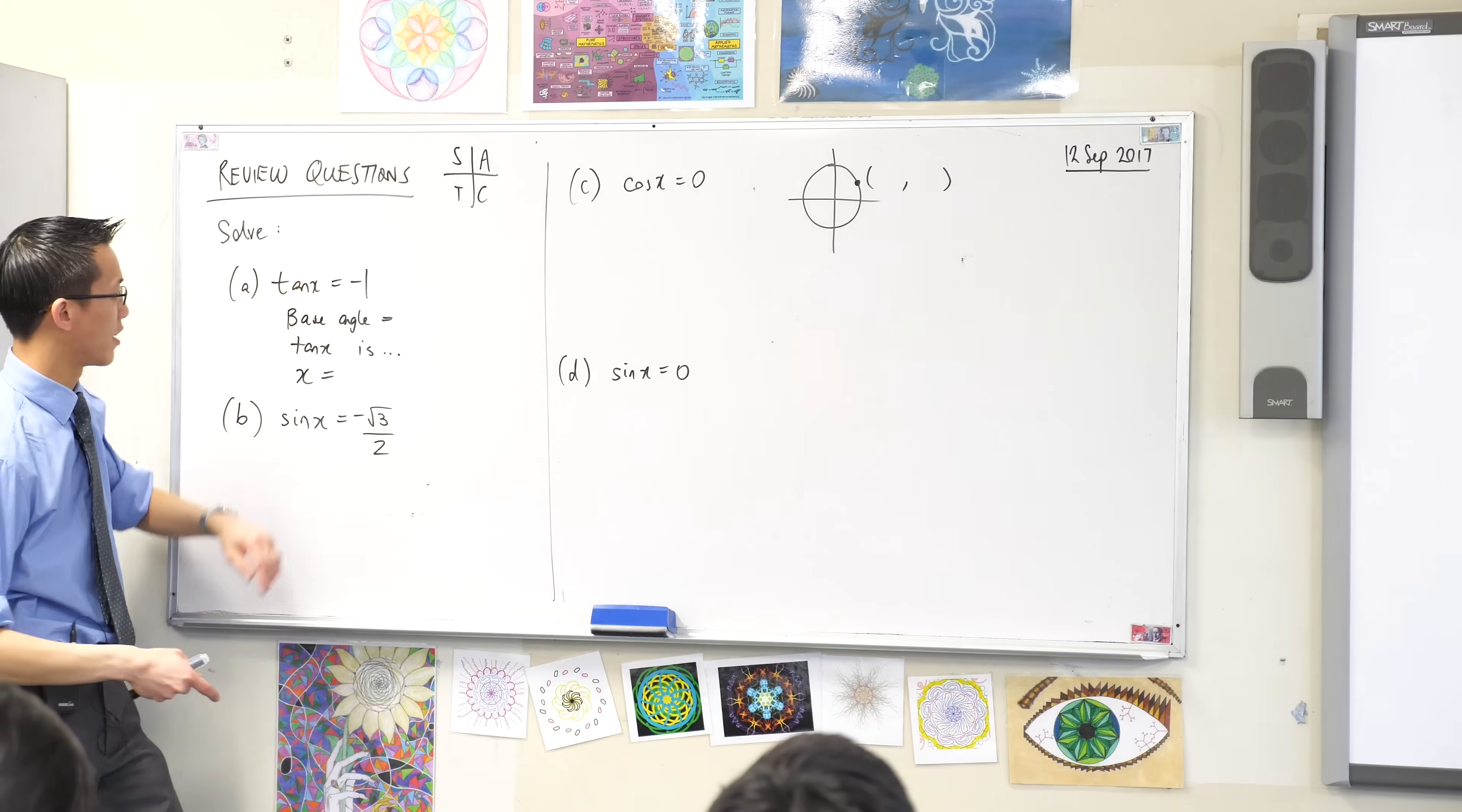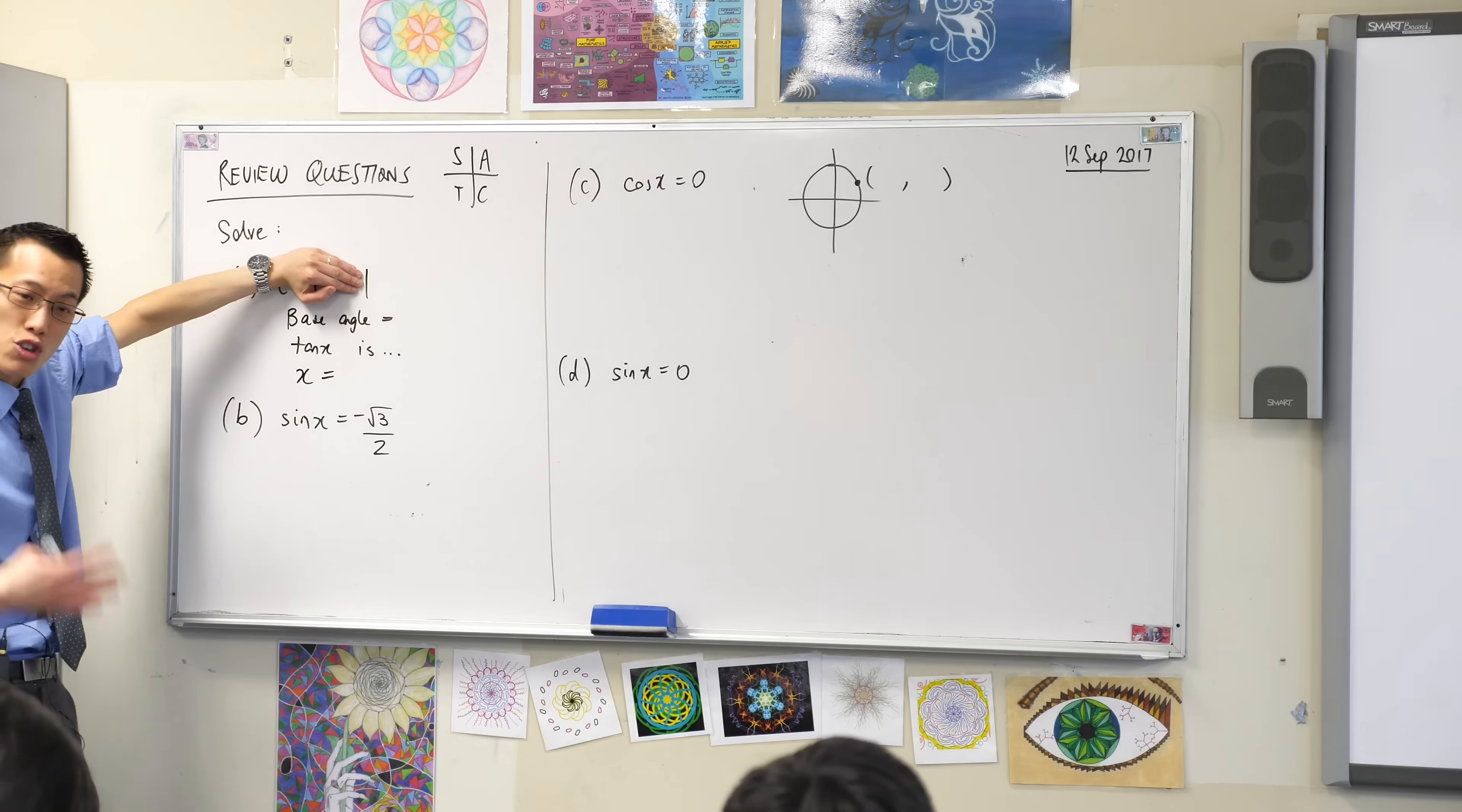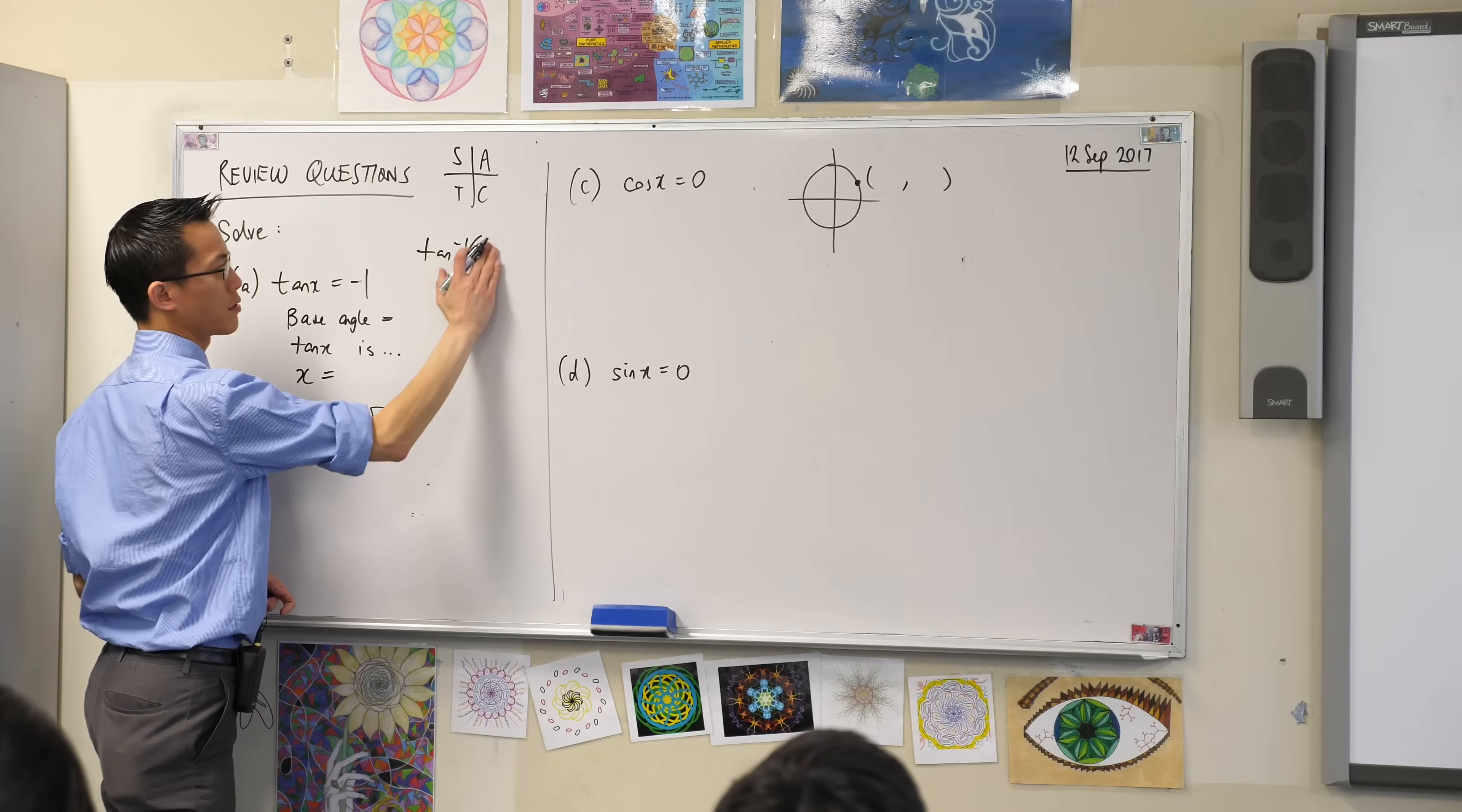To find out the base angle I don't worry about the sign, I look at that and I think tan of some angle is 1. Now this is a nice number, I'm sticking with the nice numbers. So you may know this number off the top of your head, but if you don't what do you do? You reach for your calculator and in this case, in your calculator you're going to put in this.